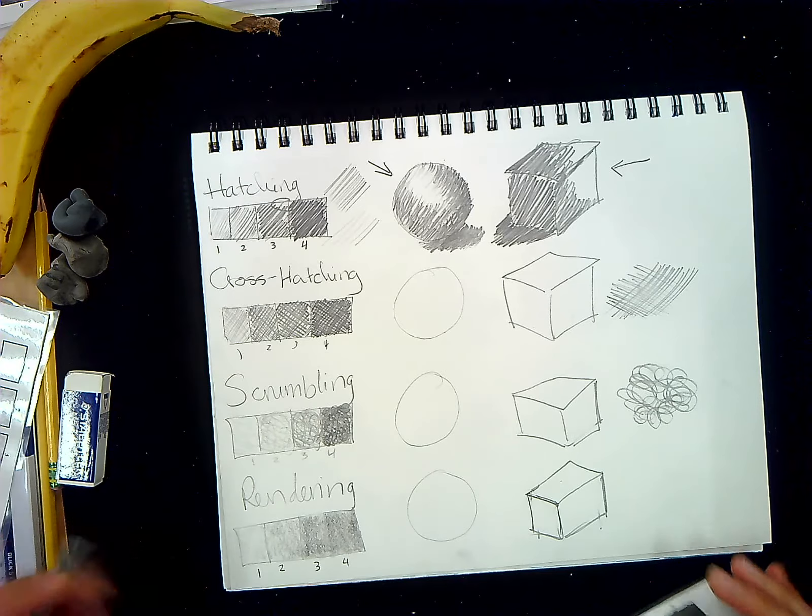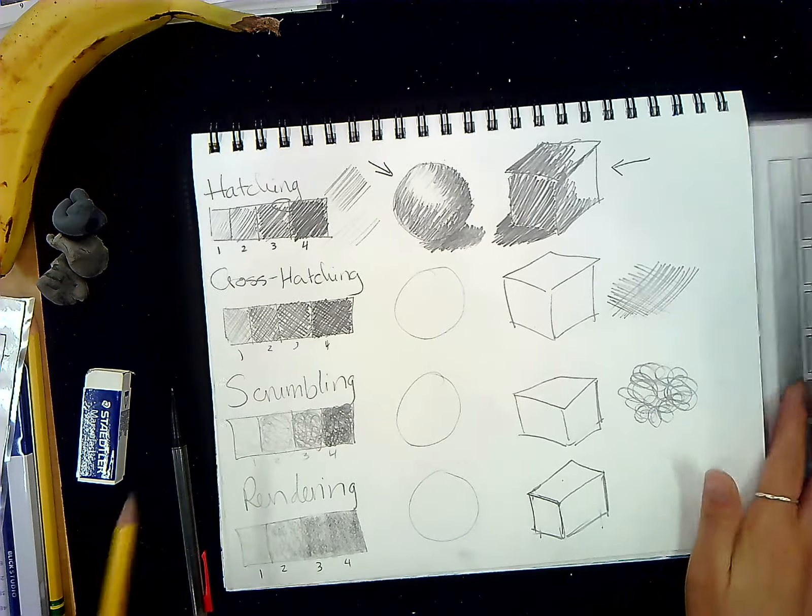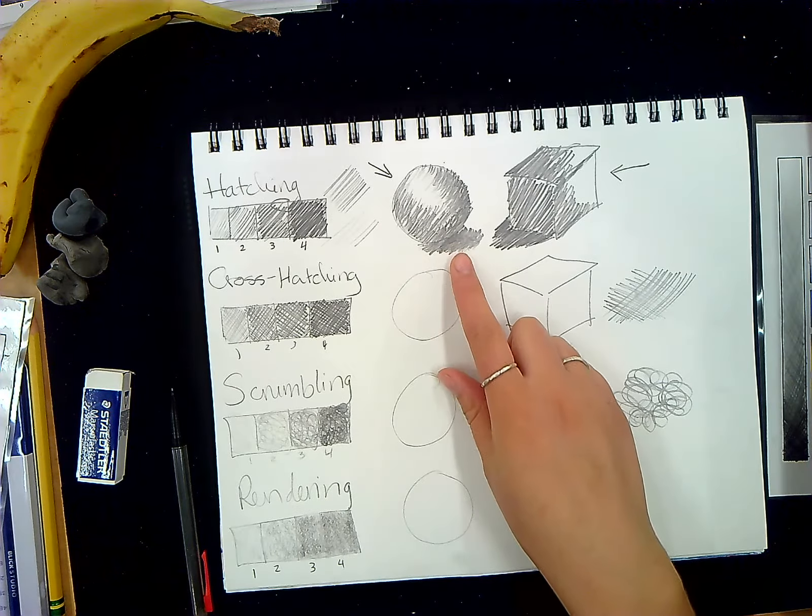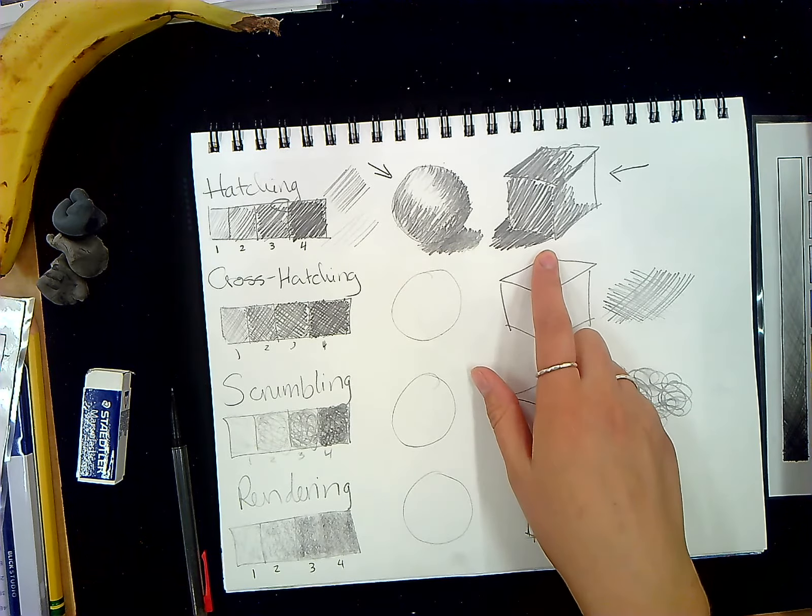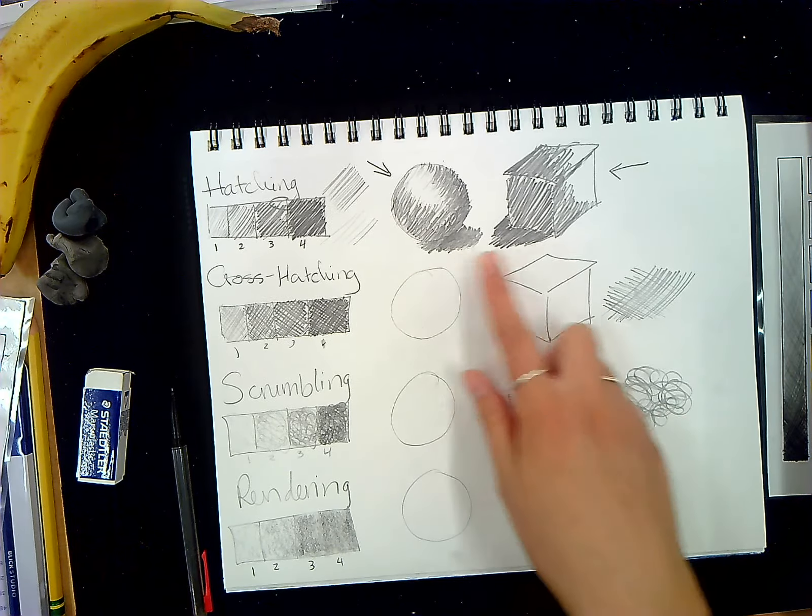Once you fill in all of those different types of drawing techniques, you are then going to apply those drawing techniques to filling in these two geometric shapes and making them look three-dimensional using shading.